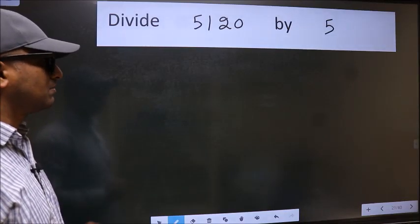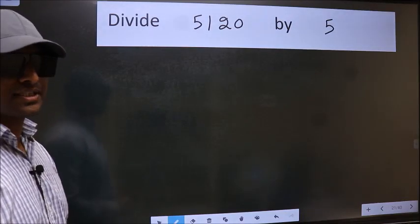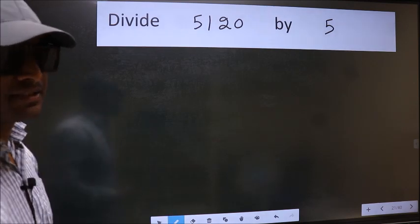Divide 5,1,2,0 by 5. To do this division, we should frame it in this way.